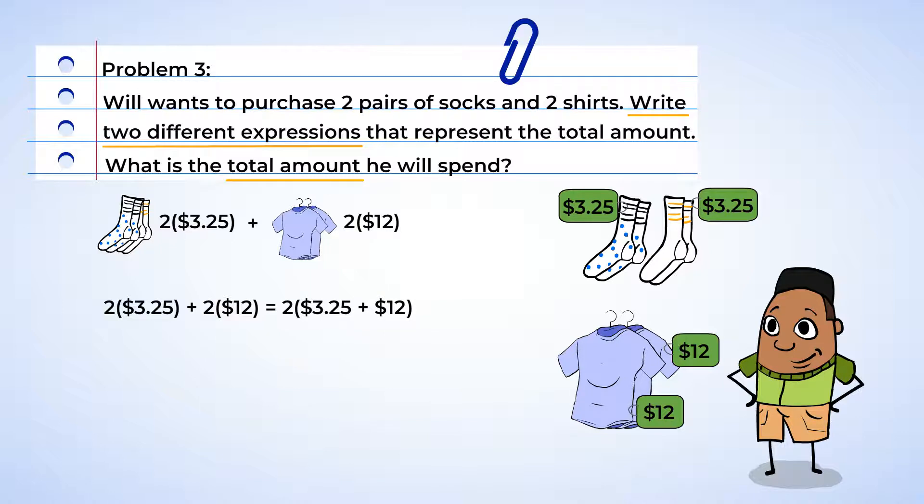The second expression looks like it could be quicker to solve. So let's use this one to find the total amount Will spent. $3.25 plus $12 is $15.25. And now we can multiply that by two to get $30.50. All right, Will spent $30.50 on those clothes.